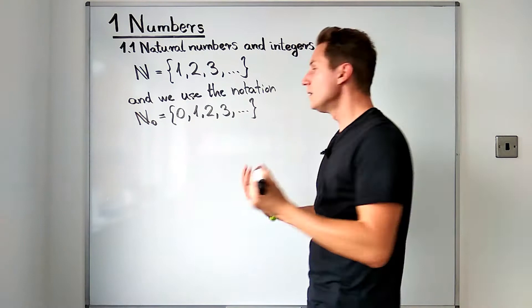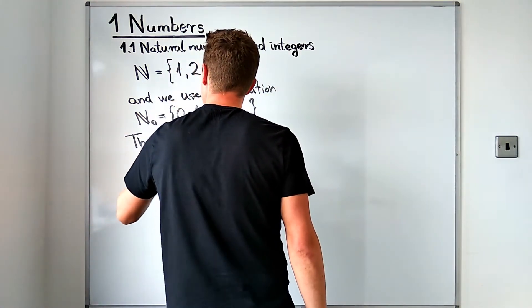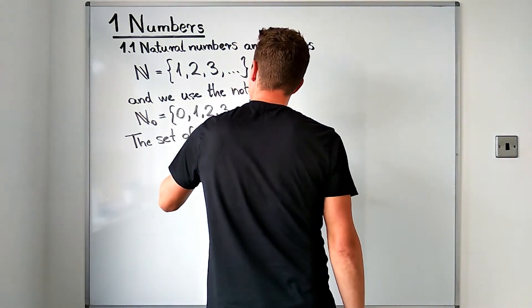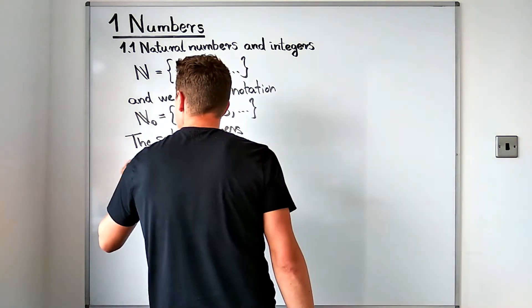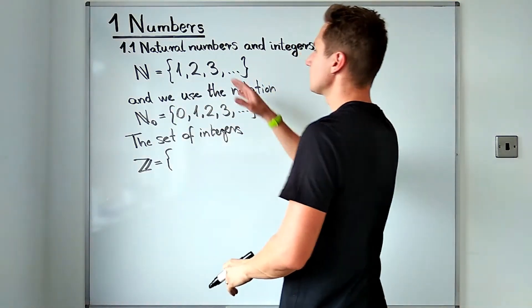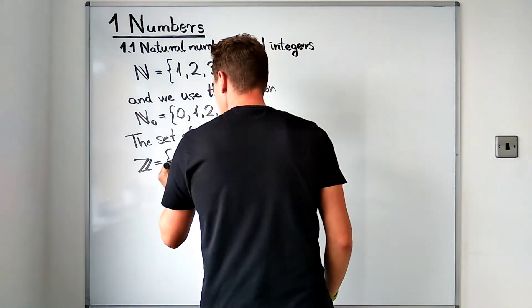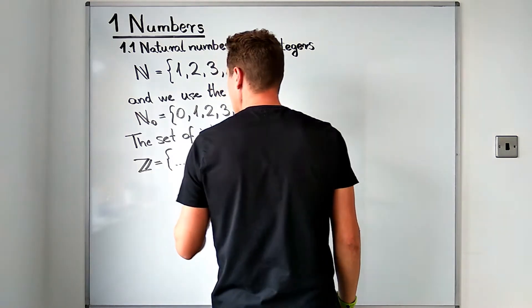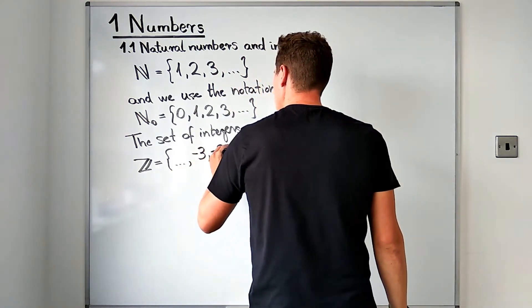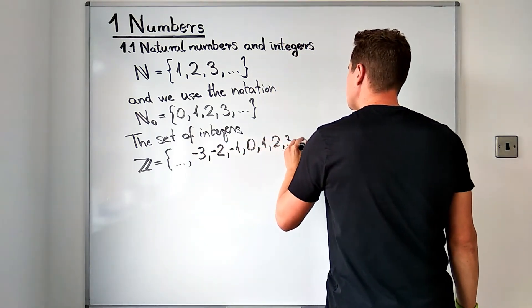We also have the set of integers and let me remind you that this set is denoted by Z and it contains all natural numbers, 0, and the negatives of natural numbers. So it has the negative integers going all the way to negative 3, negative 2, negative 1, 0, 1, 2, 3 and so on.